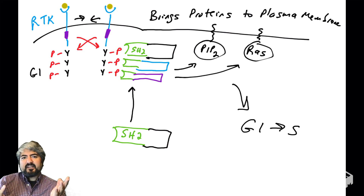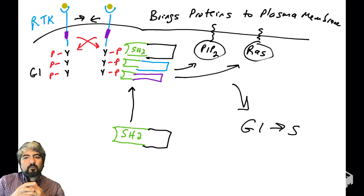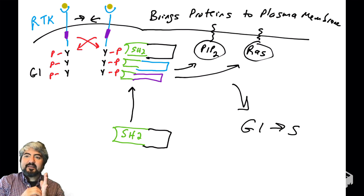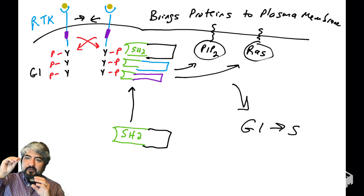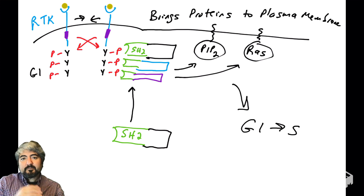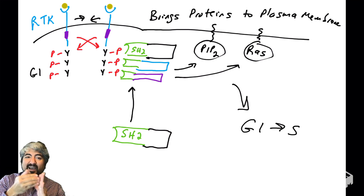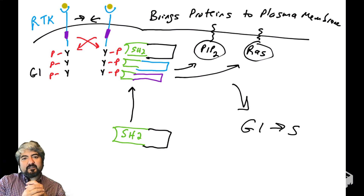Bringing these proteins from the cytosol up to the plasma membrane can have a huge effect to signal into the cell. These proteins regulate molecules that are embedded in the plasma membrane, including a molecule called PIP2 and a protein called RAS. These are key regulators of signals into the cell, playing roles in proliferation — getting the cell from G1 to S — cell survival, and all sorts of cellular metabolism. Creating new protein-protein interactions by SH2 domain-containing proteins binding phosphorylated tyrosines in receptor tyrosine kinase tails triggers signals inside the cell.